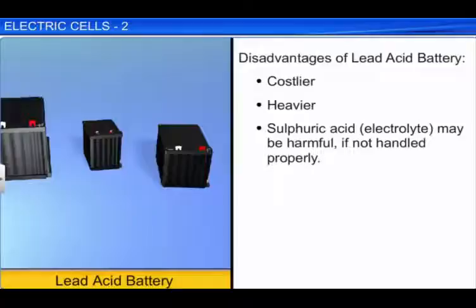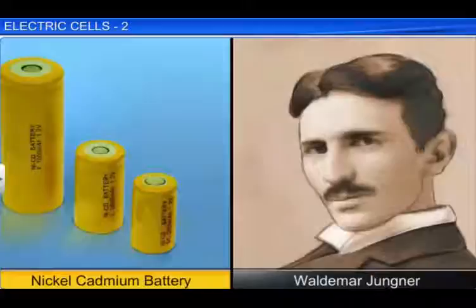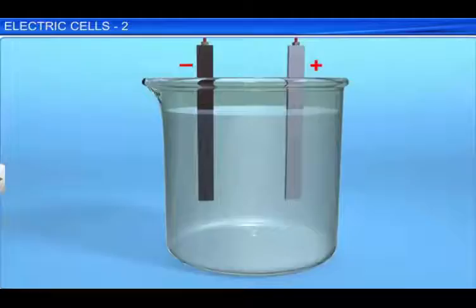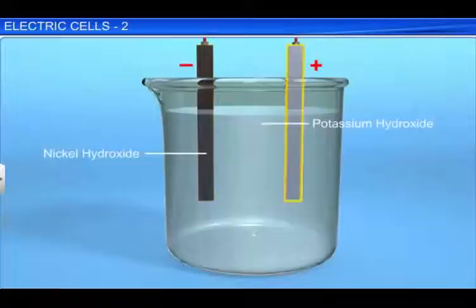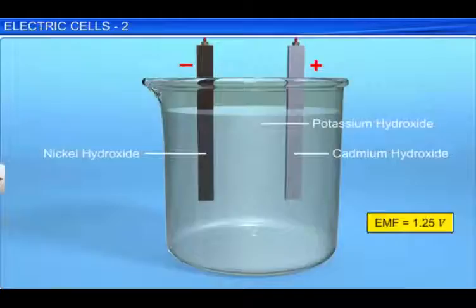Let us now study another type of secondary cell: the nickel-cadmium cell. The first nickel-cadmium battery was created by Valdemar Jagna of Sweden in 1899. When Jagna built the first nickel-cadmium batteries, he used nickel oxide in the cathode and iron and cadmium in the anode. It was later that pure cadmium metal and nickel hydroxide were used. The electrolyte used in a nickel-cadmium cell is potassium hydroxide. The negative electrode in the cell is made of nickel hydroxide and the positive electrode of cadmium hydroxide. The nominal EMF of a nickel-cadmium cell is 1.25 volts. The advantage of a nickel-cadmium cell is that it is a true storage battery with a reversible chemical reaction.